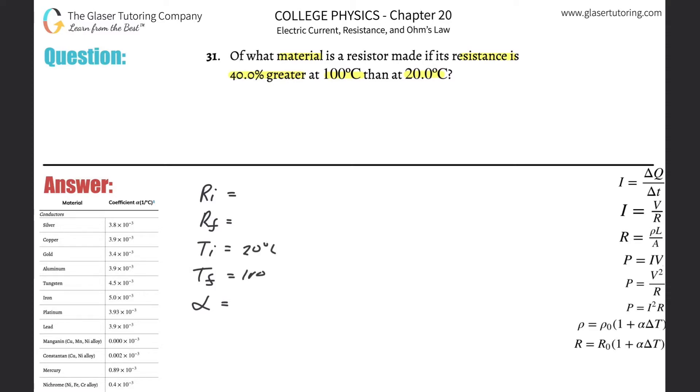It's going to go to 100. Now it says the resistance at 100 degrees Celsius—the final temperature—is going to be 40% greater than at 20, the initial temperature. So the initial resistance is some value we don't know, but the final resistance is going to be 40% larger, which is 1.4 multiplied by the initial resistance. If this is confusing, take a look at number 30.